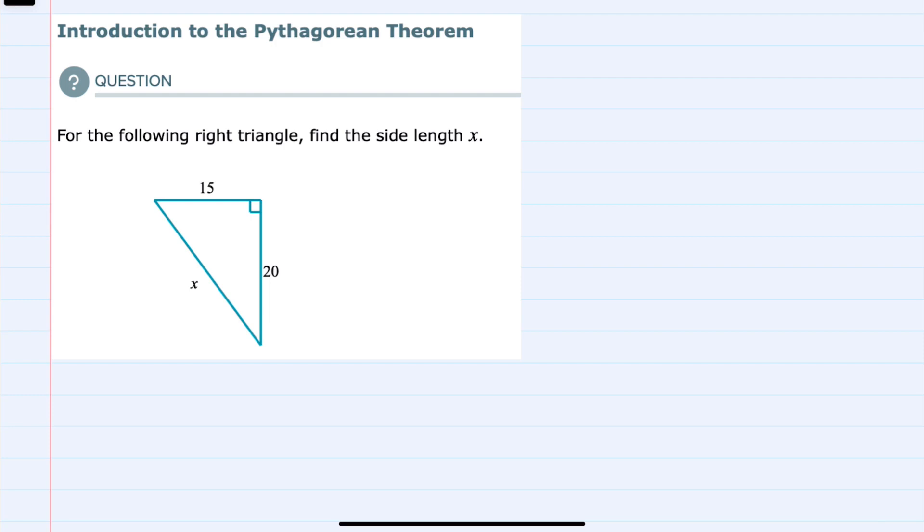For right triangles, the Pythagorean Theorem says that a squared plus b squared equals c squared.